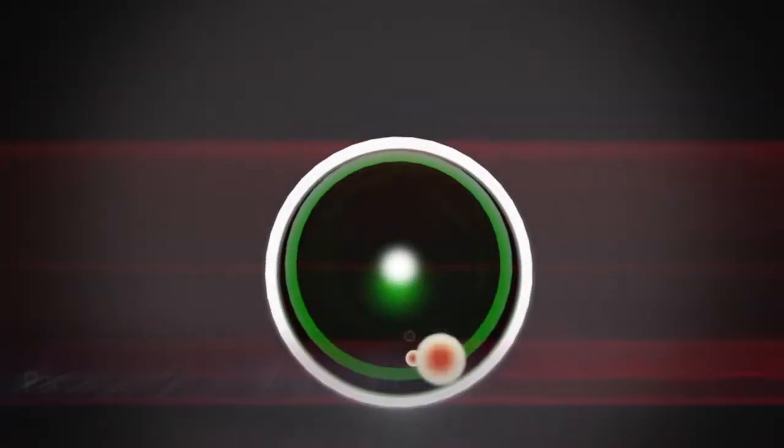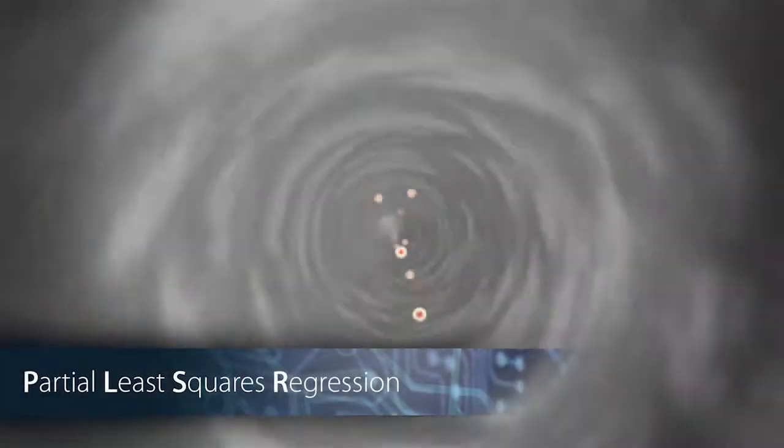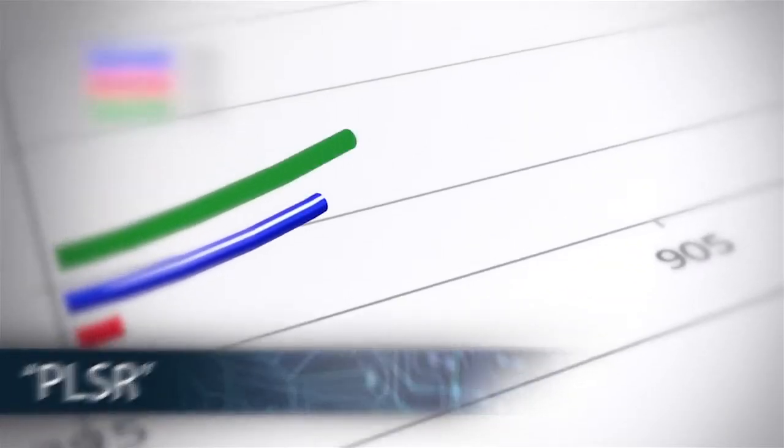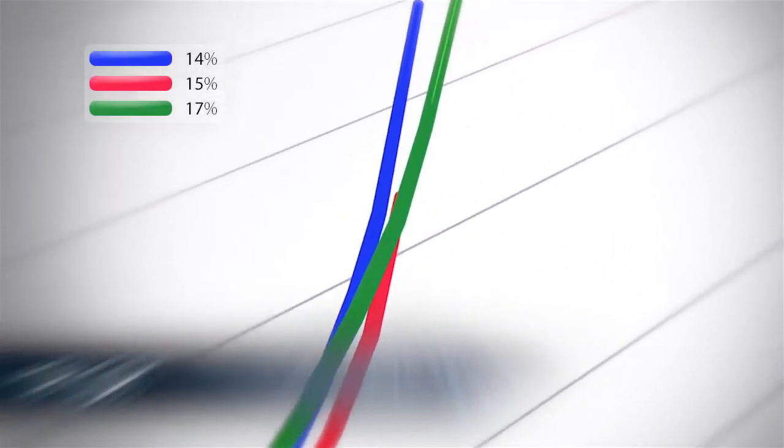This light can then be measured by the spectrometer before partial least squares regression, or PLSR, is applied. For example, we can compare the spectra of three apples.